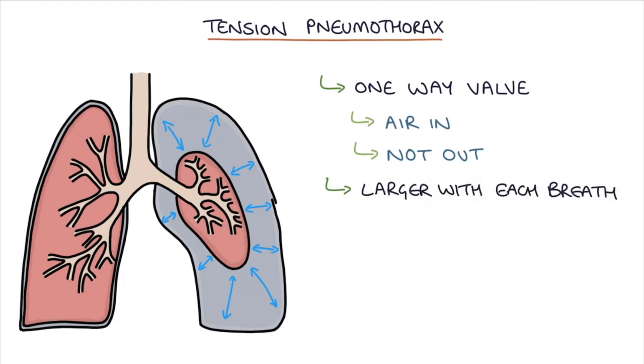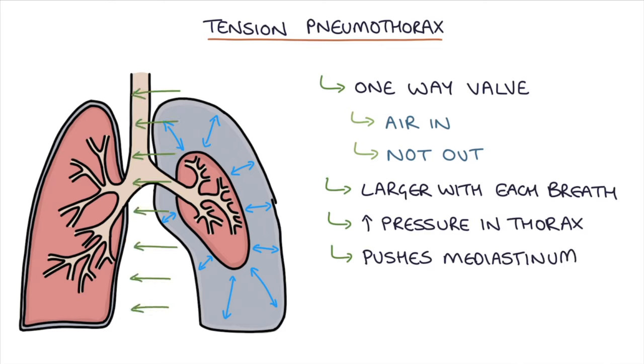This means the pneumothorax gets progressively larger with each breath. This is obviously very dangerous as it creates increased pressure inside the thorax and will end up pushing the mediastinum across, kinking the big vessels in the mediastinum and causing cardiorespiratory arrest.